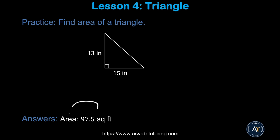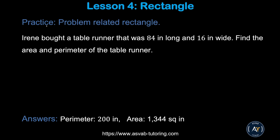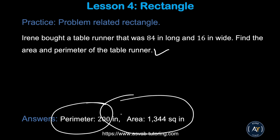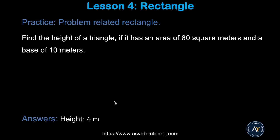Pause the video and try this practice problem by yourself — make sure you get the correct answer. In the next practice problem, find the area and perimeter of a table runner — make sure you get perimeter equal to 200 and area equal to 1,344 square inches. In the following problem, make sure you get height equal to 4.